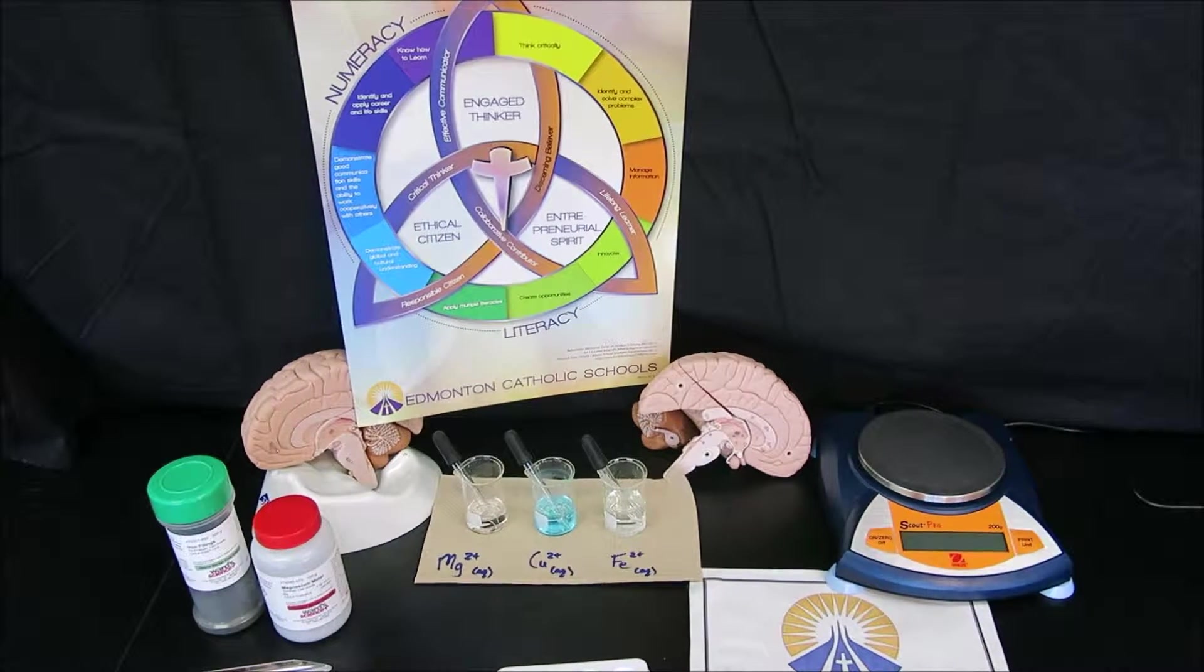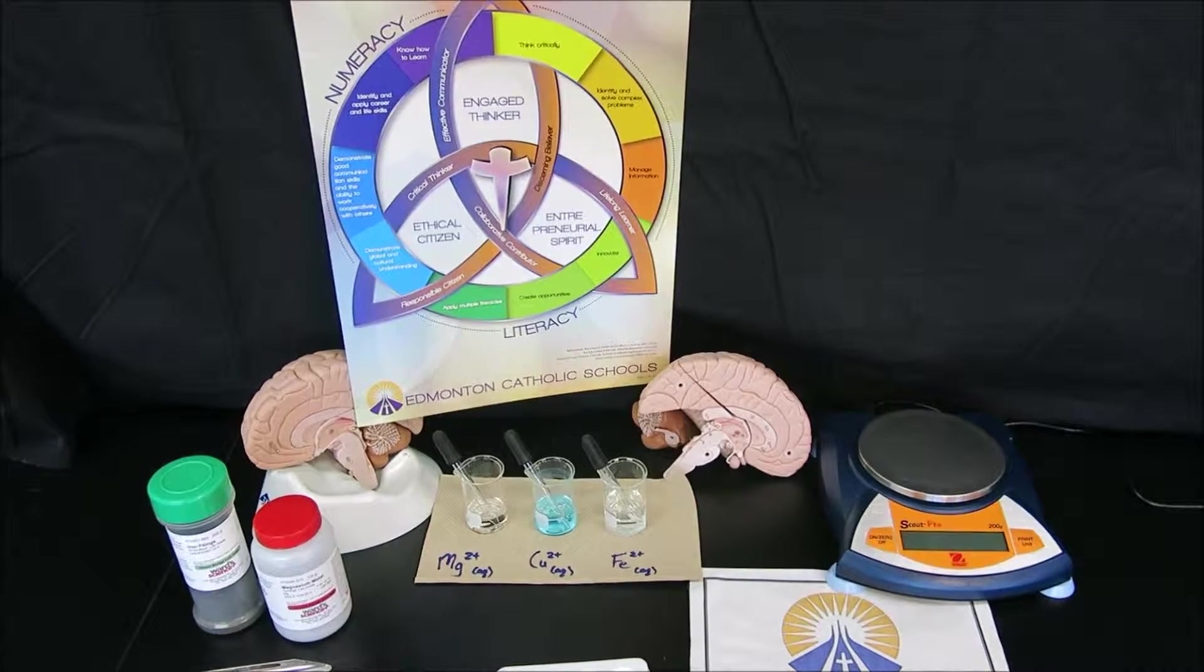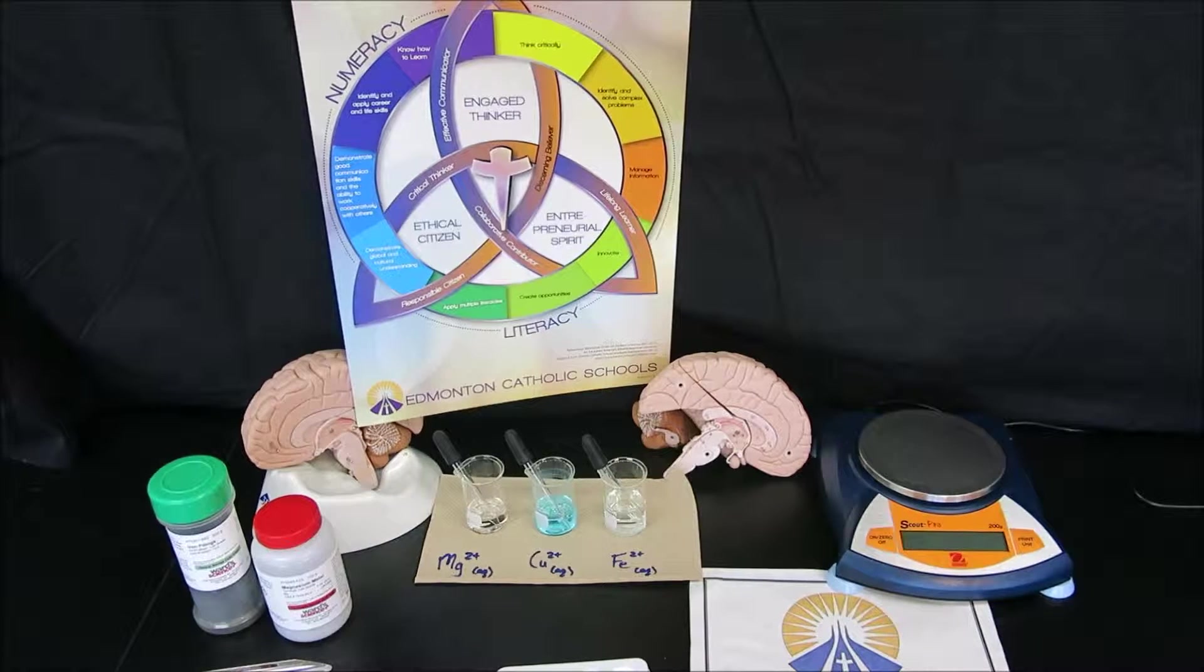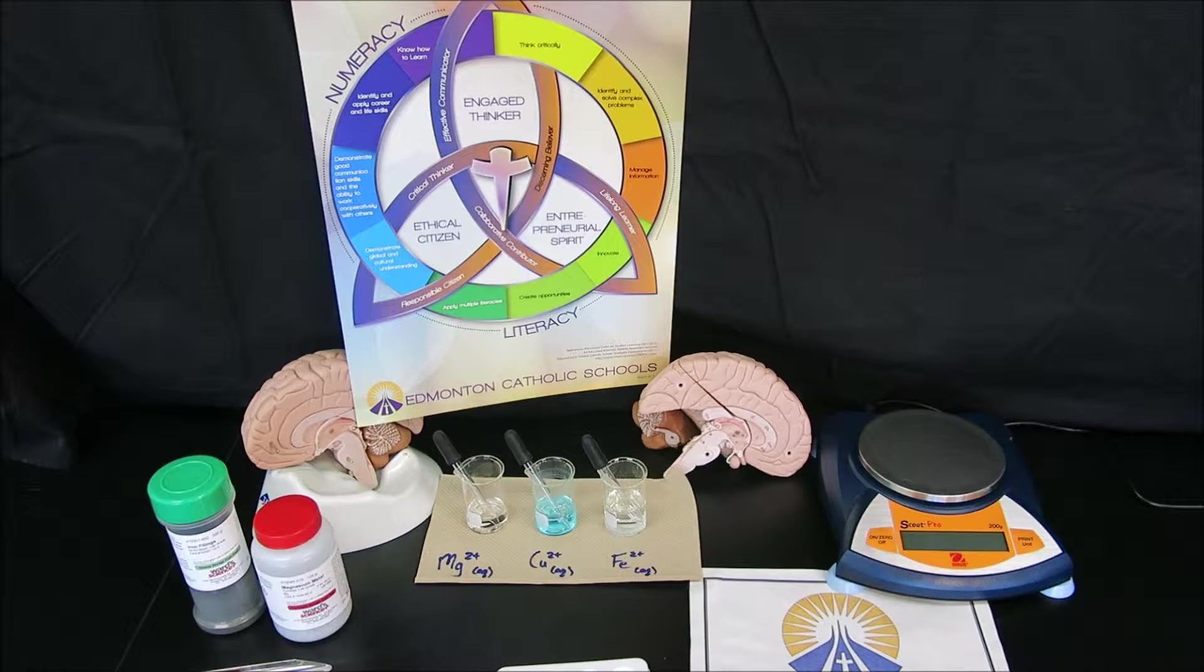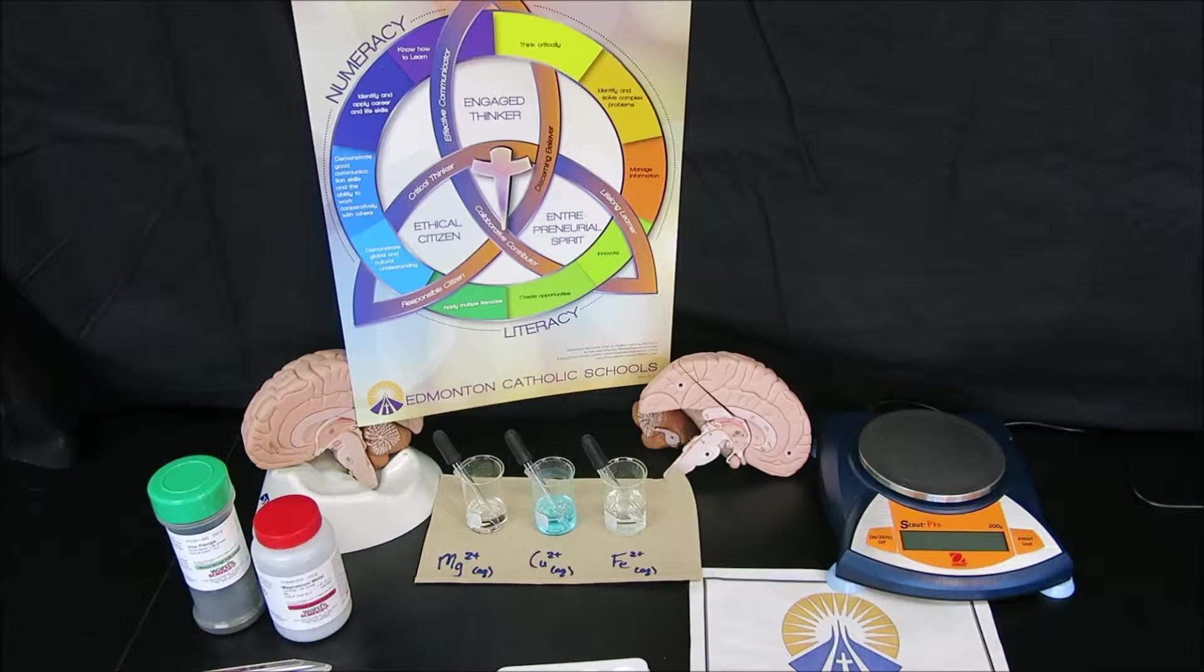For this lab, we're going to be testing the reactivity series for metals and their metal ion solutions. In this way, we can build a reduction half-reaction table using the spontaneity idea. So when we see a spontaneous reaction, we know that the strongest oxidizing agent is higher than the strongest reducing agent.